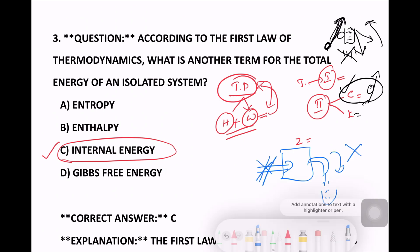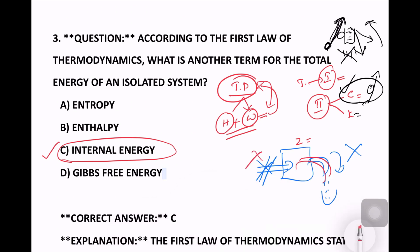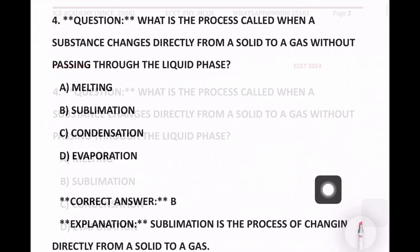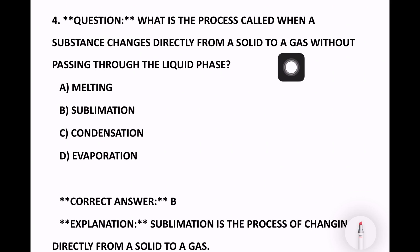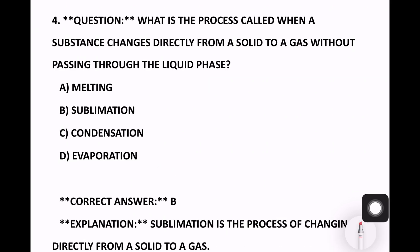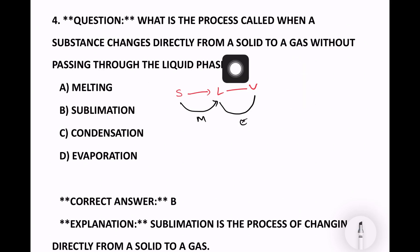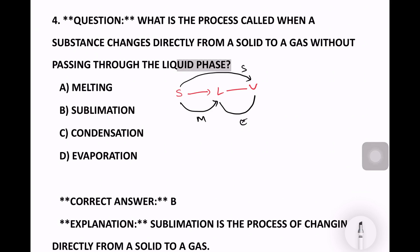What is the process called when a substance changes directly from solid to gas without passing through the liquid phase? Options are melting, sublimation, condensation, and evaporation. Solid to gas — that is sublimation. The right answer is option B, sublimation.